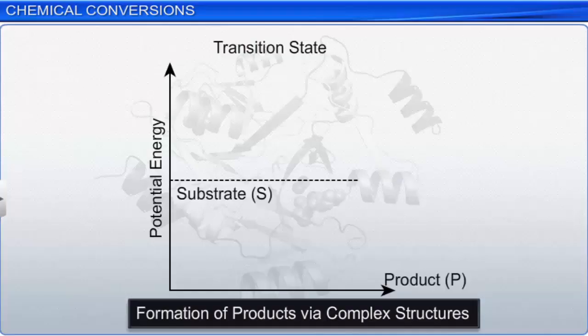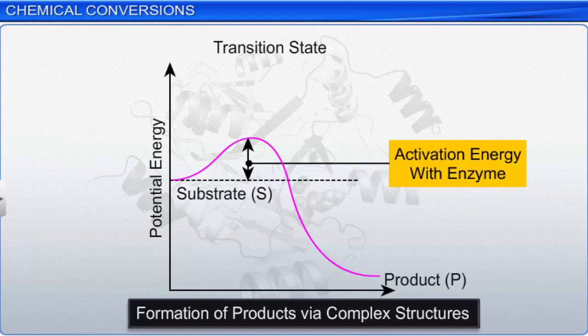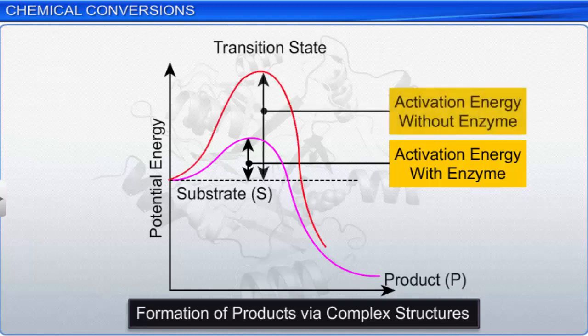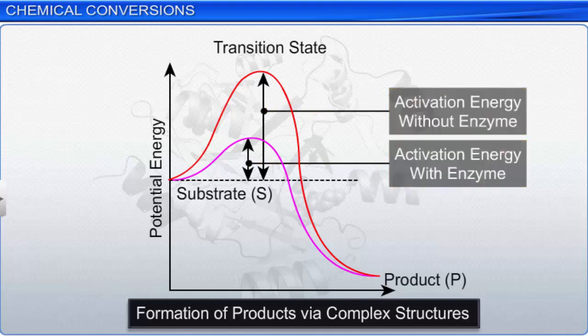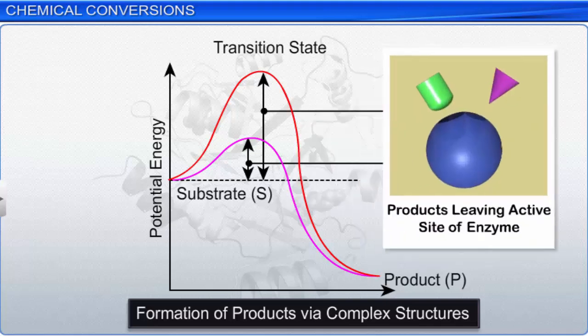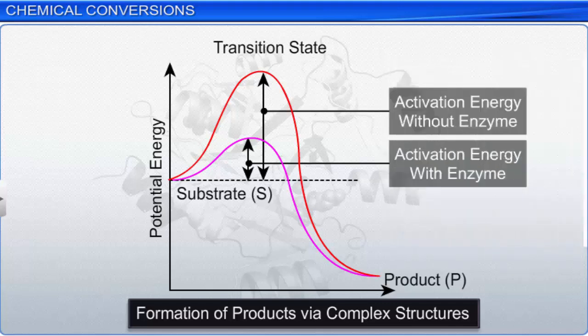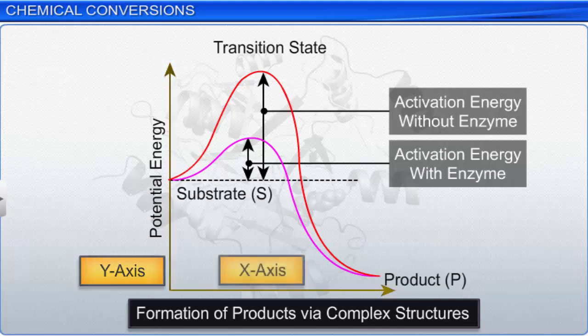This is a graph, which shows how enzymes lower the activation energy during reactions, thereby increasing the rate of reaction. Activation energy is the minimum amount of energy required for the chemical reaction to take place. In other words, it is the minimum amount of energy required by the substrates to form products. The y-axis represents the potential energy content, while the x-axis represents the formation of products via complex structures.